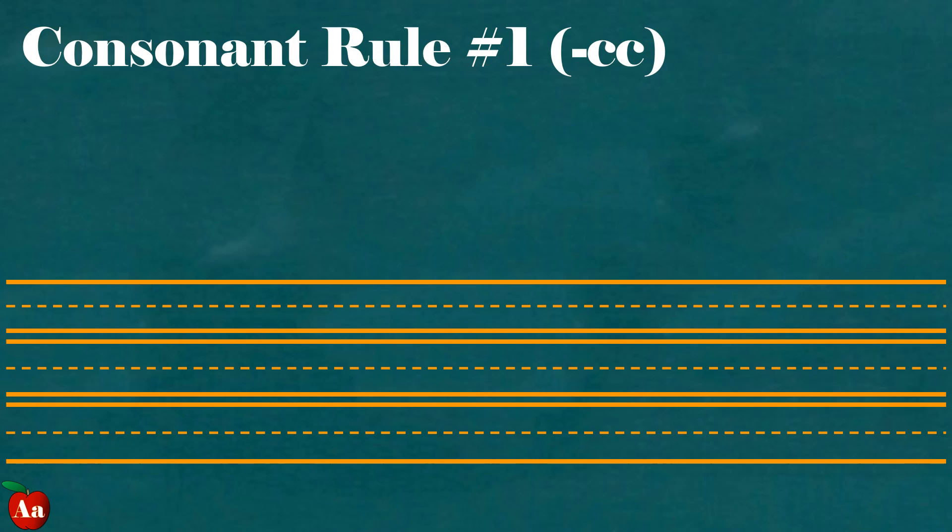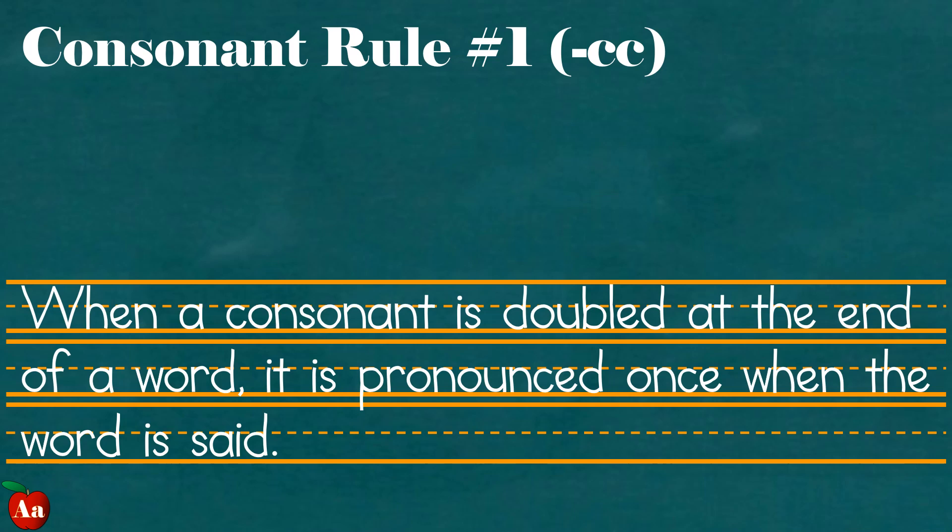Consonant rule number one, hyphen CC. When a consonant is doubled at the end of a word, it is pronounced once when the word is said.